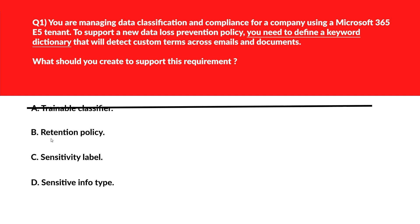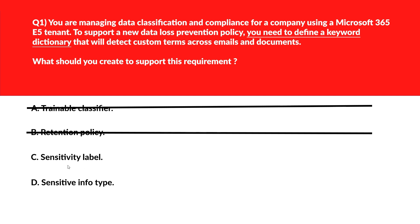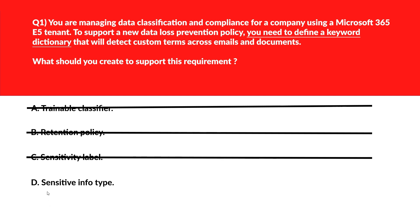Moving to option B: Retention Policy. Retention policy controls data lifecycle but doesn't support keyword-based classification. Incorrect. Option C: Sensitivity Label applies protection settings to content but doesn't define keyword detection logic. Incorrect. Option D: Sensitive Information Type. A keyword dictionary is created and managed as part of a custom sensitive information type to enable detection of specific terms across Microsoft 365 content. Option D is the right answer.